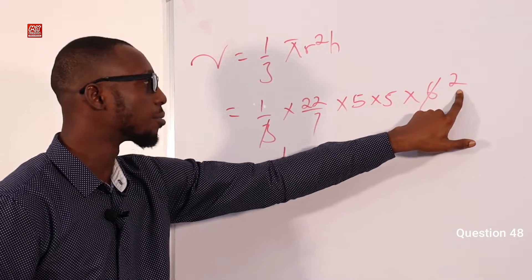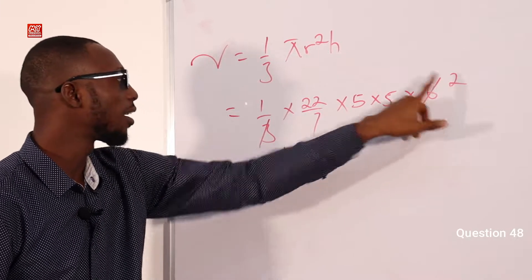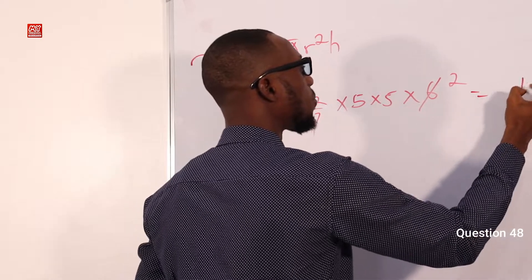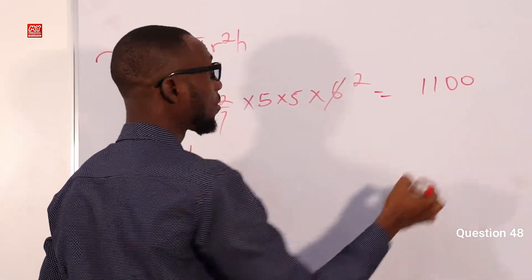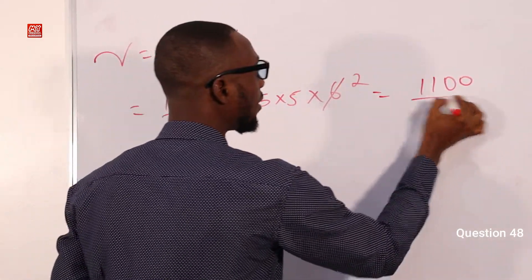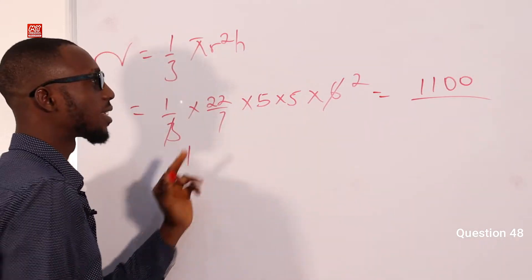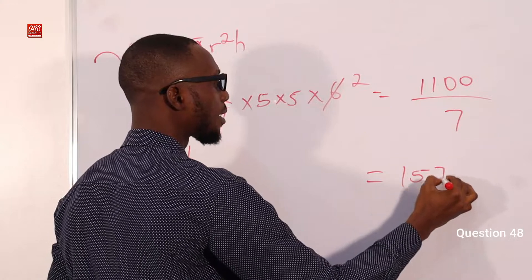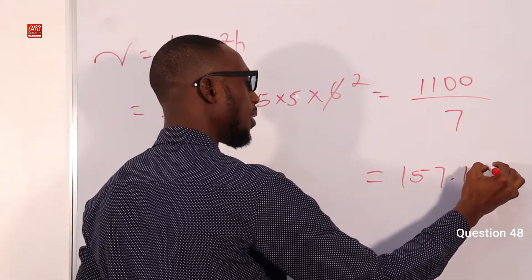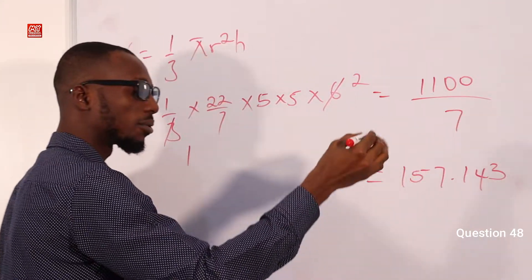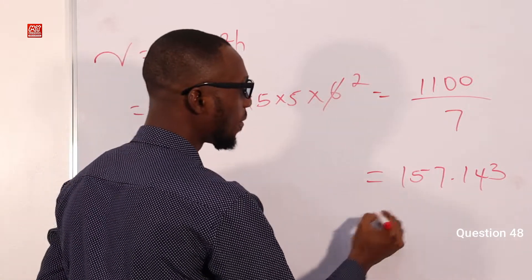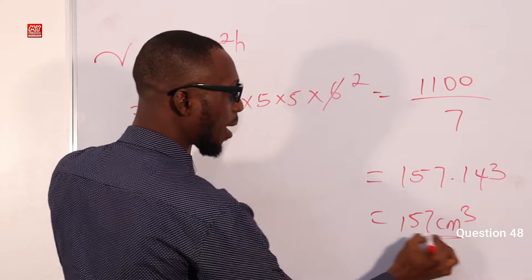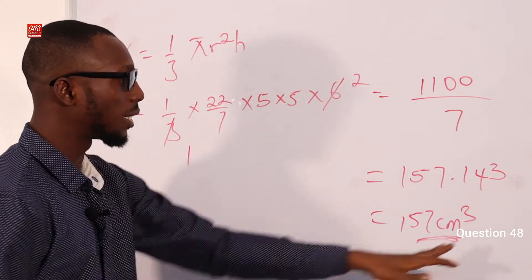Times 2, that is 50. So 50 times 22 should give us 1100, over 7. When we divide this we should have roughly 157.143 thereabouts. Roughly we should have 157 cm cubed. Remember, we are working with volume, so the units should be in cm cubed.